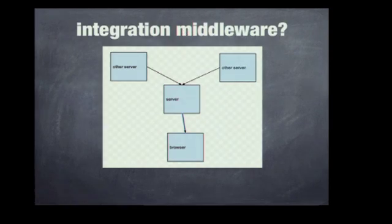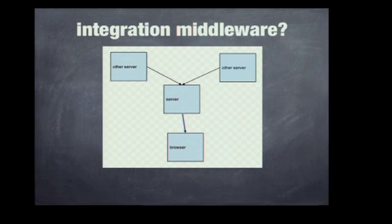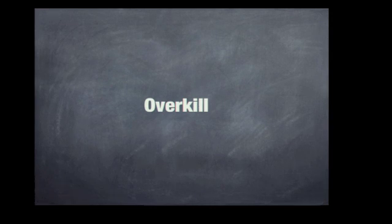So how do we work around it? The first way is integration middleware: you have all your different servers, and then you have your web server serving up your app, acting as a sort of transparent proxy to all those other servers. But it's kind of overkill — it just adds more latency, more hops in the network.